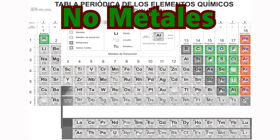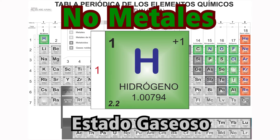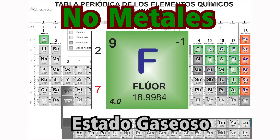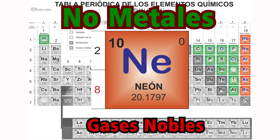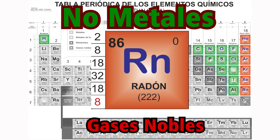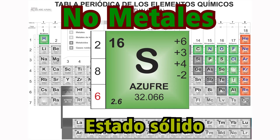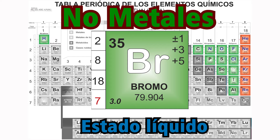El segundo tipo se llama no metales. Algunos se pueden encontrar en estado gaseoso, tal es el caso del cloro, el oxígeno, nitrógeno, hidrógeno y el flúor. Pero pueden ser líquidos a ciertas temperaturas. Evidentemente, los gases nobles también se encuentran en estado gaseoso. Pueden estar en líquido, pero solo dentro de un rango muy pequeño y muy específico de temperatura. Otros como el carbono, azufre, fósforo, selenio, yodo y astato, se encuentran en forma natural en estado sólido. Solamente el bromo es el único que se puede encontrar en la naturaleza en estado líquido.